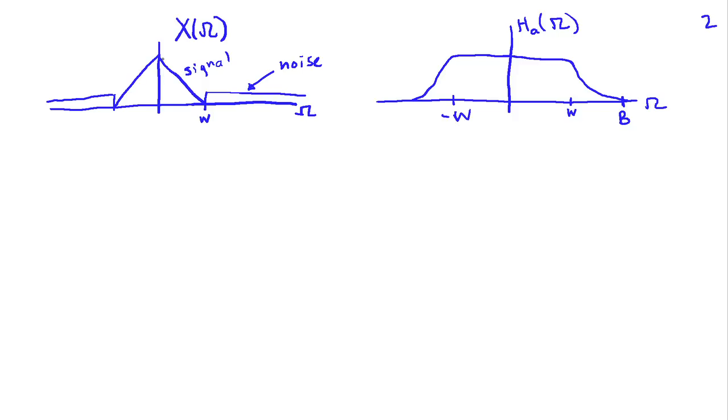And I've drawn here a signal X of omega which has a noise associated with it. And I've drawn the special case where the signal lies alone between frequencies minus W and W. And then above W, we've got noise. It could be noise in the electronics that's sensing the signal or an amplifier or something like that. But there's higher frequency noise that's being generated.